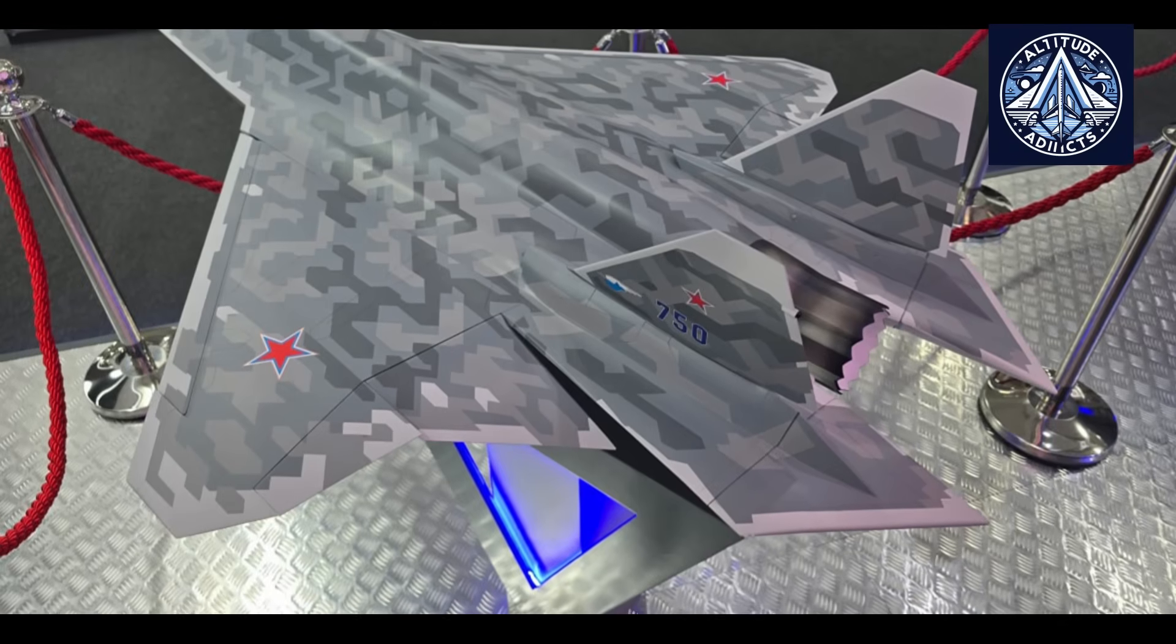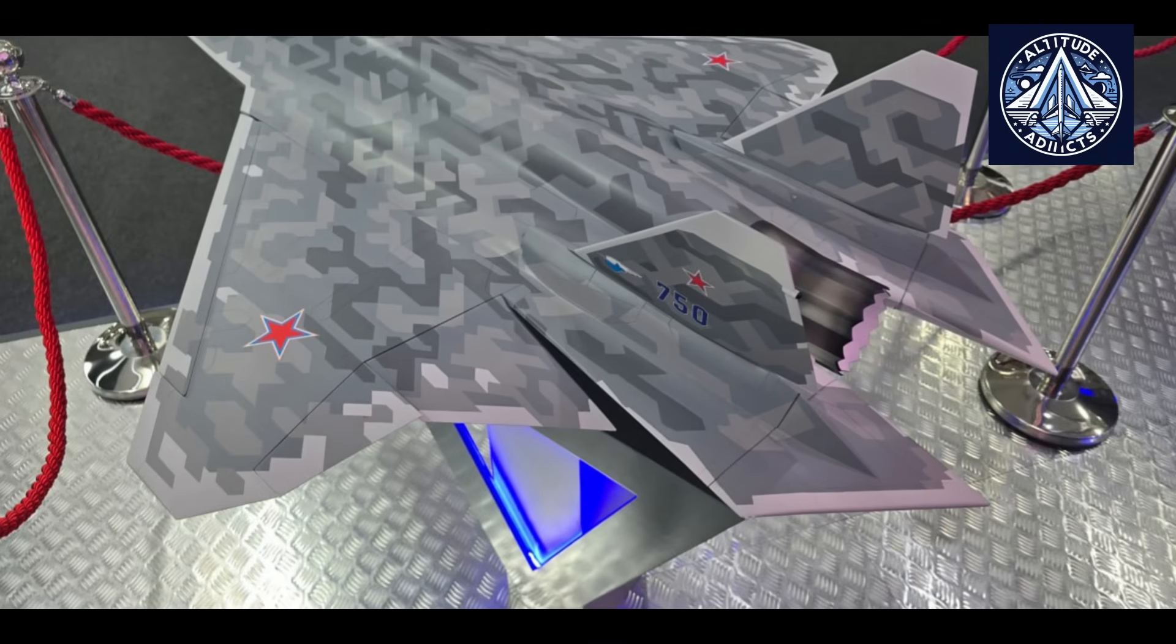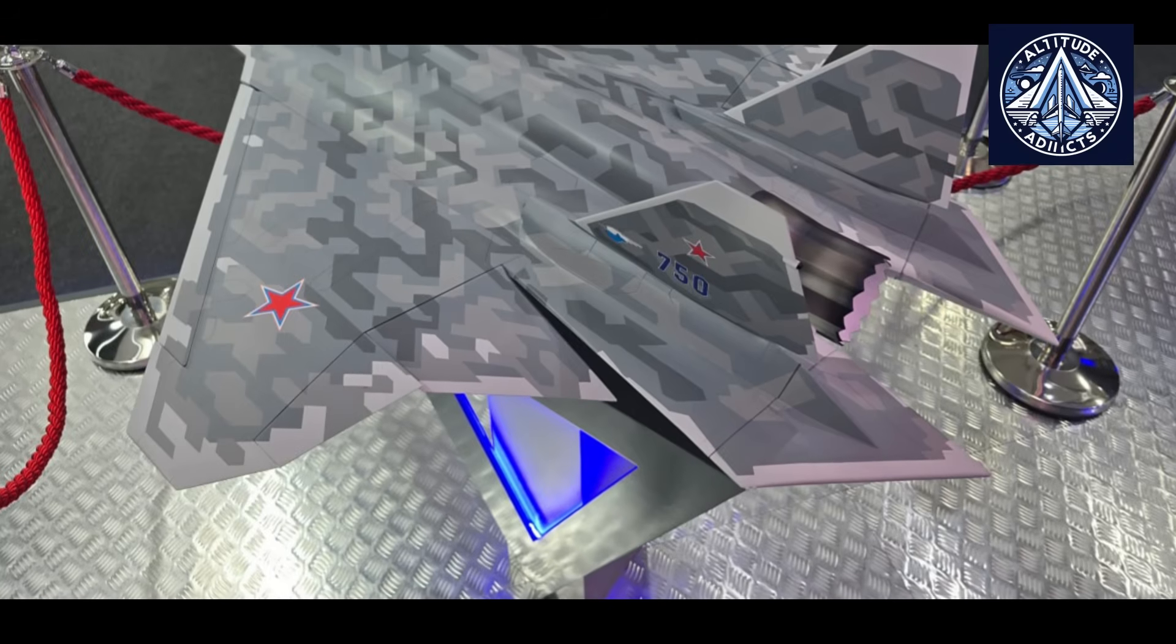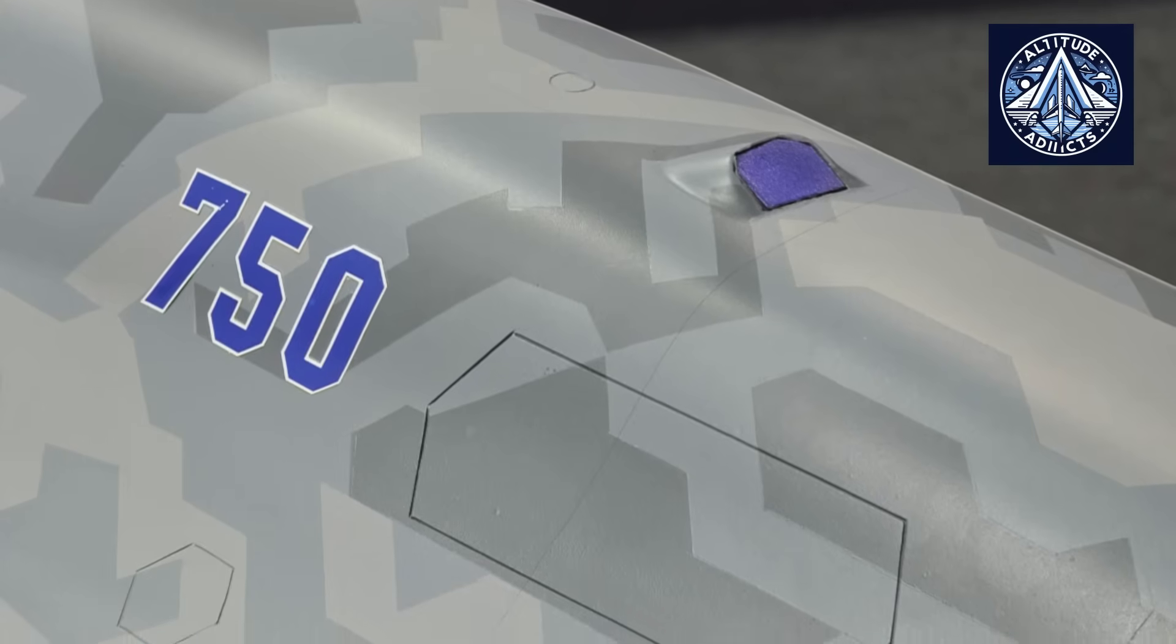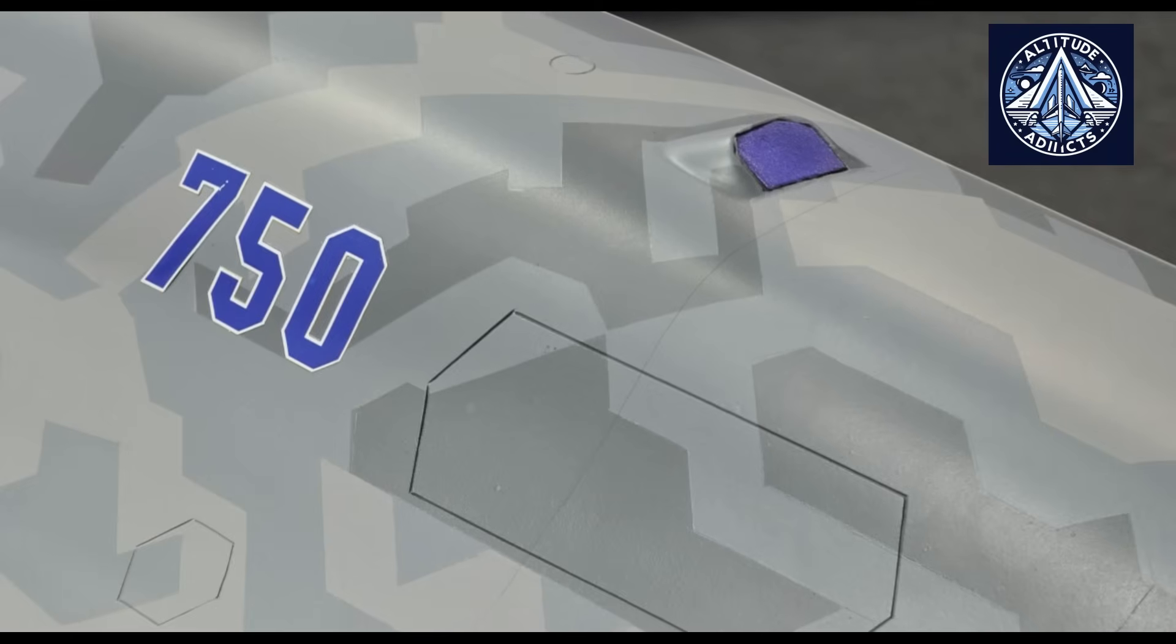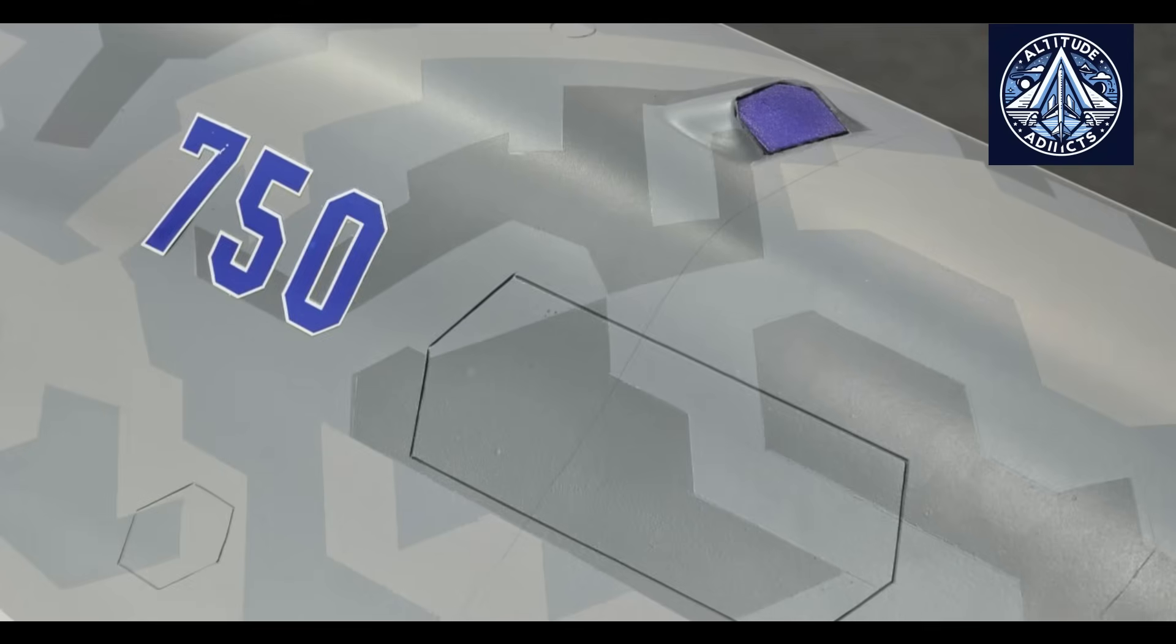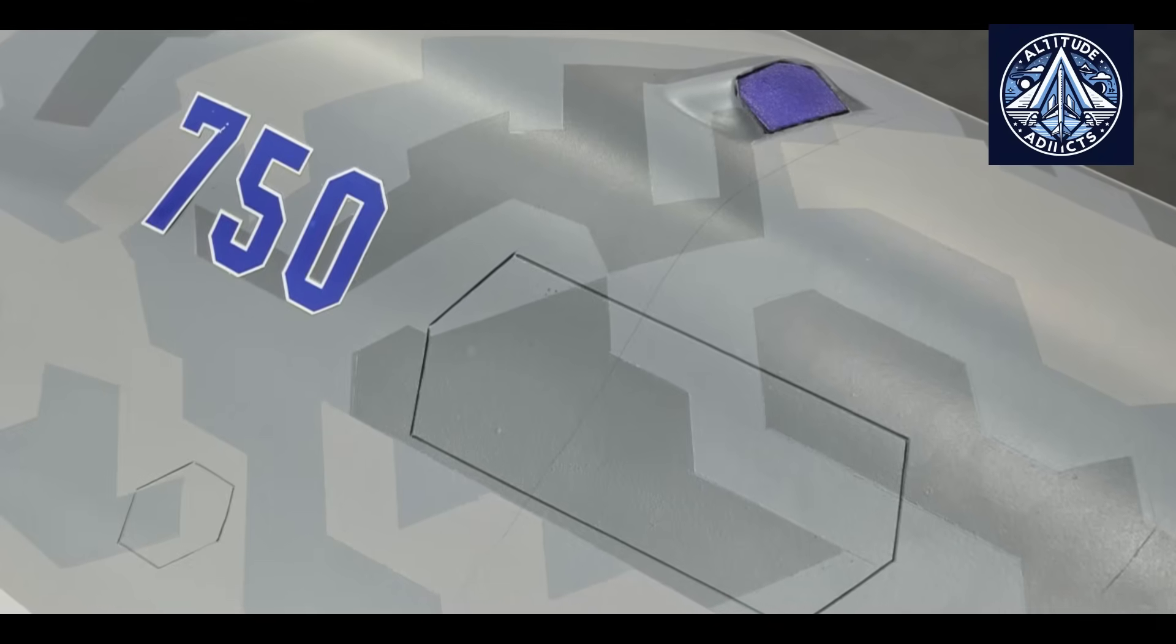The aircraft's estimated takeoff weight of roughly 18 metric tons, combined with its sizable internal volume for weapons, positioned the Su-75 as a more economical alternative to heavier fifth-generation fighters. Its projected 7.4-ton combat payload, distributed across internal bays designed to reduce radar visibility, distinguished it from other light fighters.